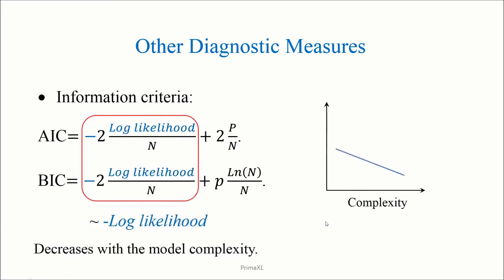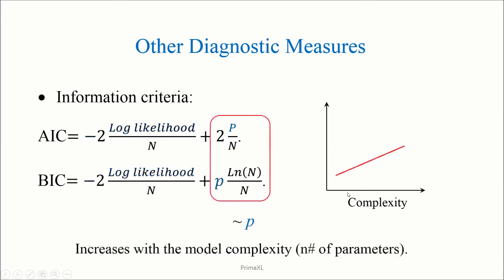The first term, which is minus the logarithmic likelihood, usually decreases as the model becomes more and more complex. However, the complexity comes with a cost. P is the number of parameters. As P increases, the second term also increases.